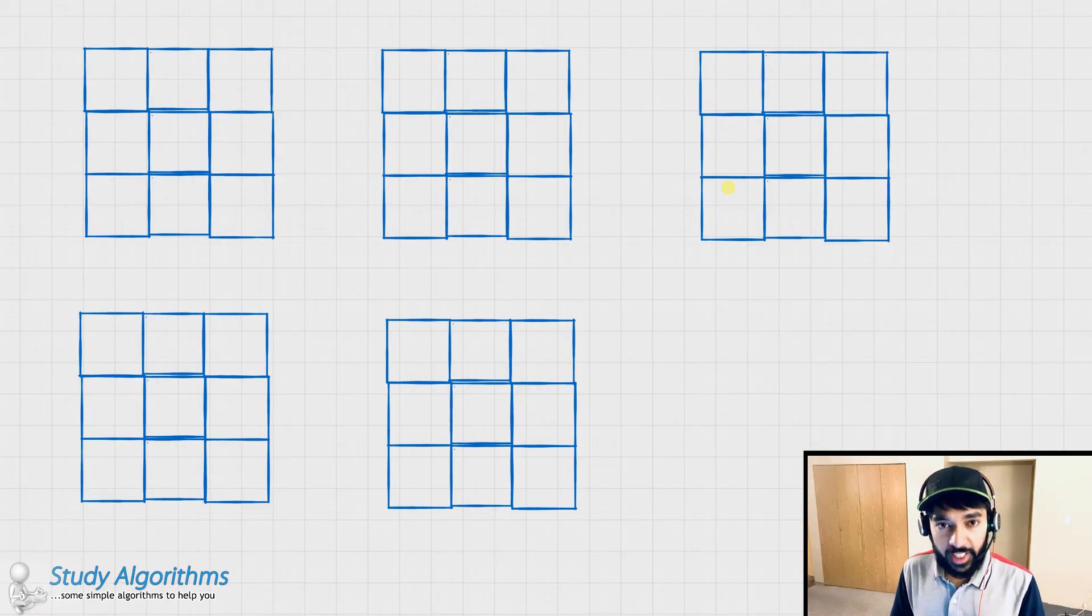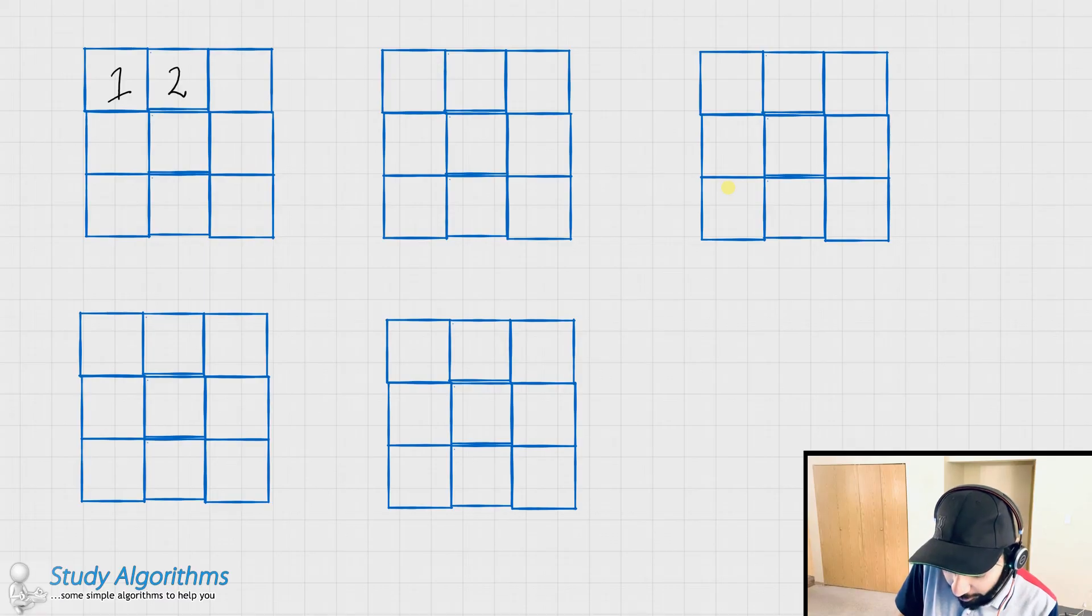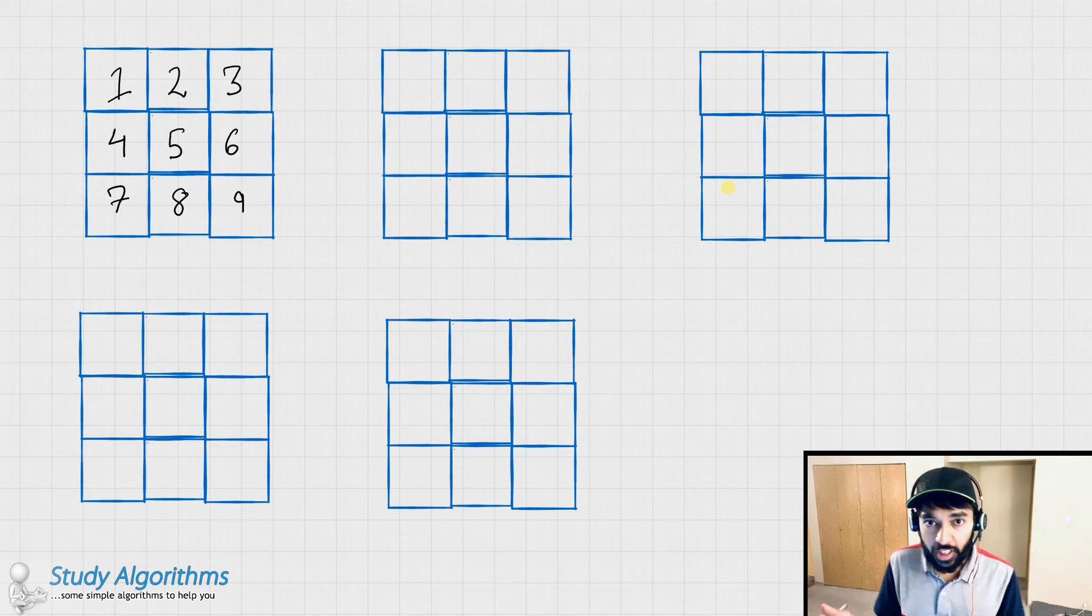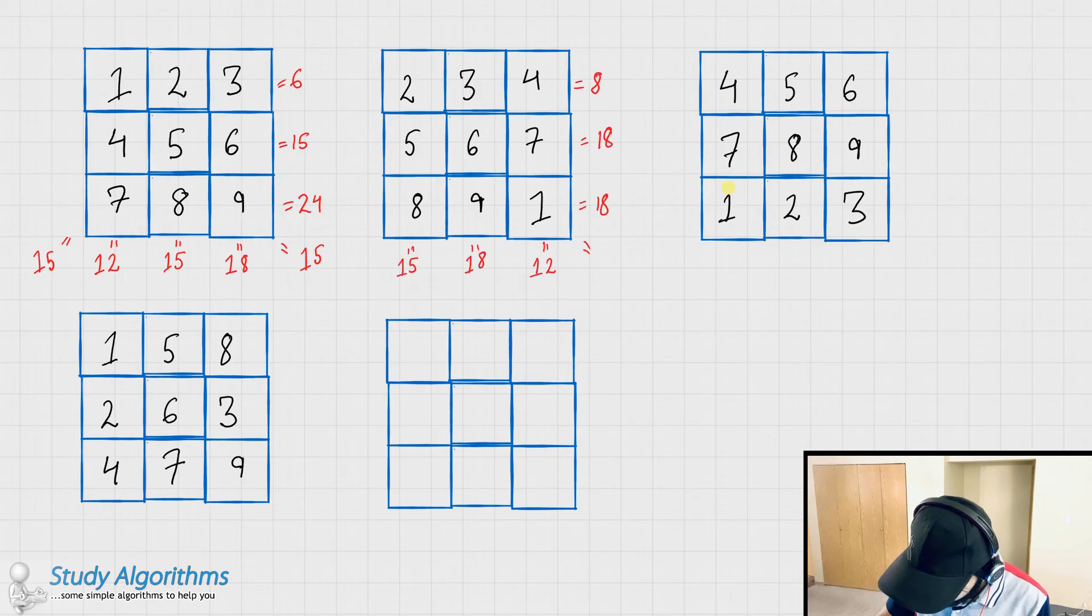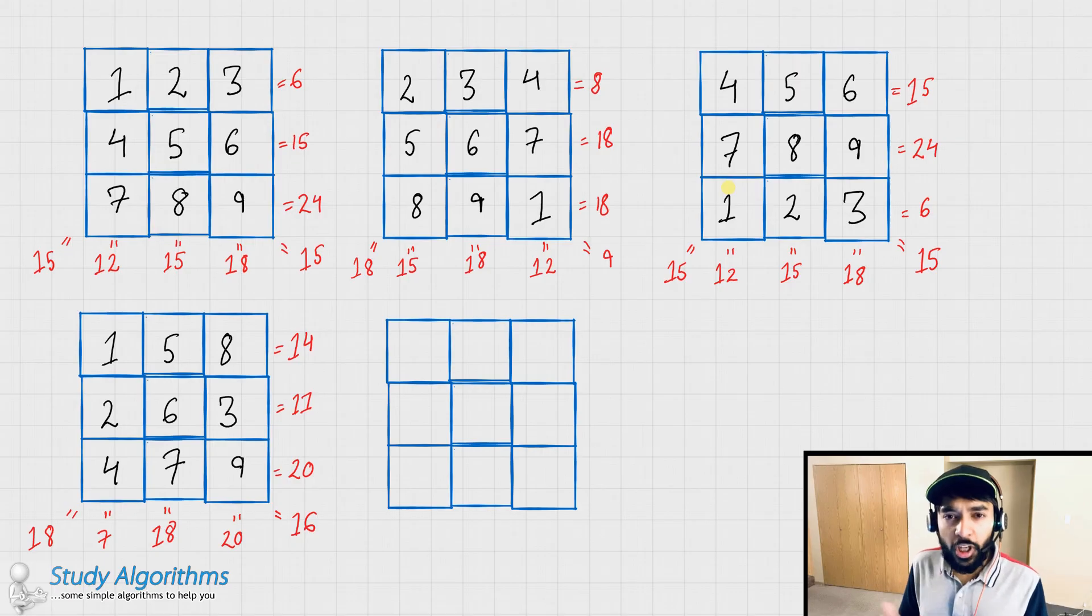Now, how do you go about filling this? A brute force approach would be, you start filling up the numbers randomly, and then try to calculate the sums of all the rows and columns. In this case, we found the sums to be pretty different, and hence, this is not the solution. If you just keep on applying the brute force method, something like this, I just took up some random combinations to just find out the sums.